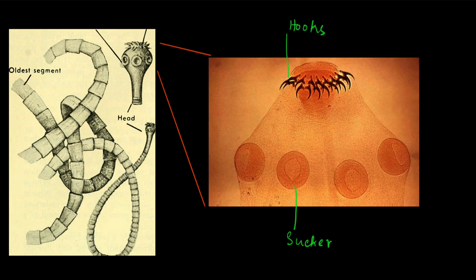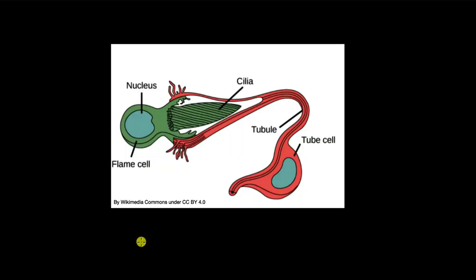Another interesting thing about the platyhelminths is their excretory system. So in their excretory system there is this specialized cell called the flame cell. This whole thing is the flame cell. Now it's an interesting name, a flame cell. Why?